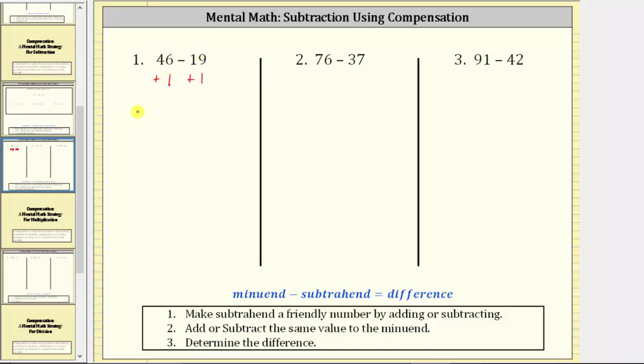And because 46 plus one is 47, and 19 plus one is 20, the equivalent difference is 47 minus 20, which is much easier to compute mentally. 47 minus 20 equals 27. This difference is 27 and so is the original difference.